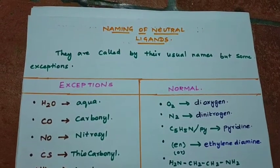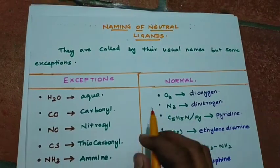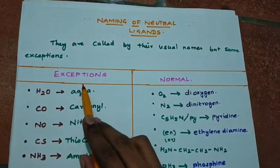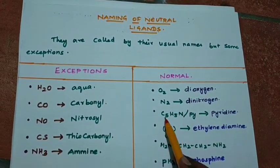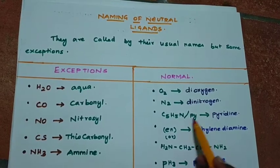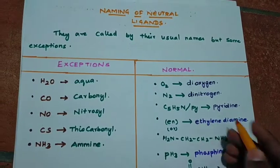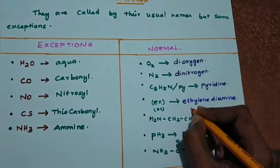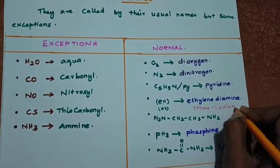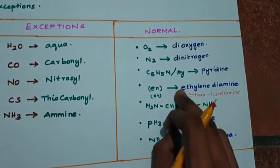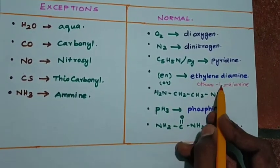When naming neutral ligands, they are called by their usual names but with some exceptions. For example, O2 is 'dioxygen', N2 is 'dinitrogen', C5H5N (pyridine) is 'py' or 'pyridine'. EN is ethylene diamine, also called ethane-1,2-diamine. The common name is ethylene diamine but the IUPAC name is ethane-1,2-diamine.